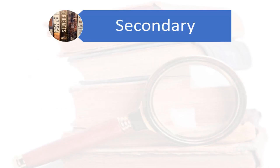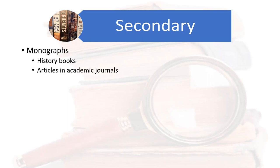Tertiary sources are built on our next source type: secondary sources. In general, history books and academic journal articles are secondary sources, but some history books might be tertiary sources. Books or articles written by authors who rely almost exclusively on other books or articles fall into this category of tertiary sources. Textbooks are a good example of this.